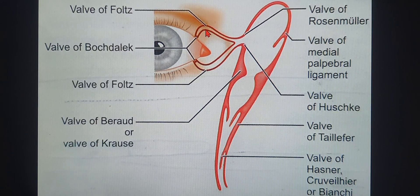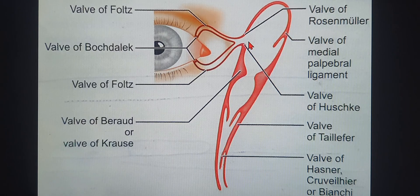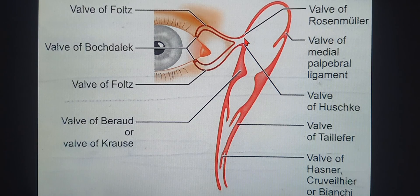The valve of Faults controls movement at the vertical-to-horizontal transition of the canaliculus. The most important valve is the valve of Rosenmuller, which is at the superior level at the region where the common canaliculus opens into the lacrimal sac.